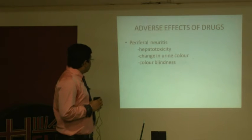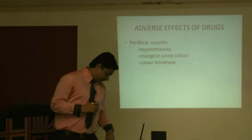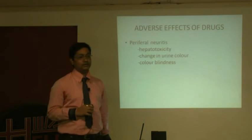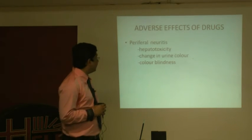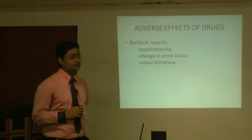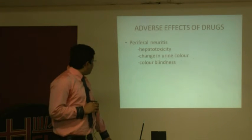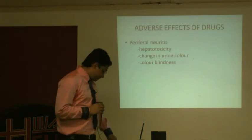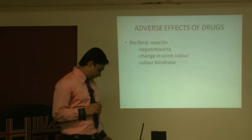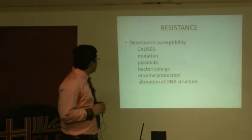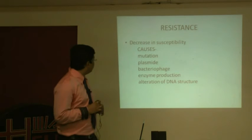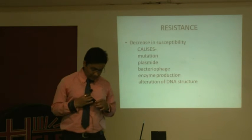Hepatotoxicity is the main limiting factor and sometimes requires stopping the drugs. Rifampicin causes a change in urine color, producing mostly orange-colored urine. If a patient is alarmed by this symptom and stops the drug on their own, that is also a major cause of drug resistance. Color blindness can be caused by ethambutol, particularly if given to children below six years of age.